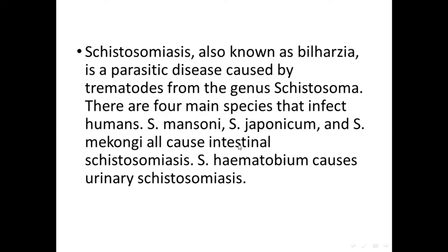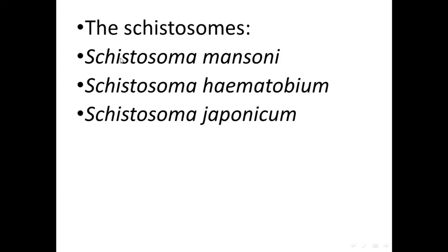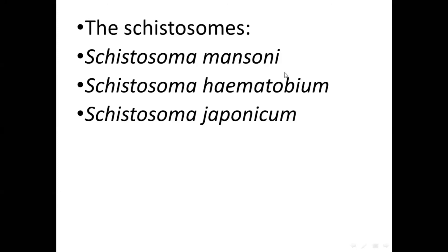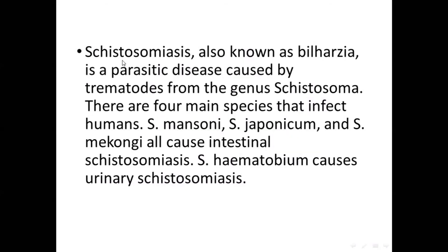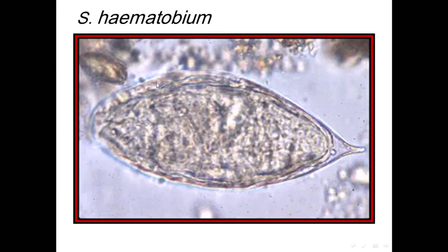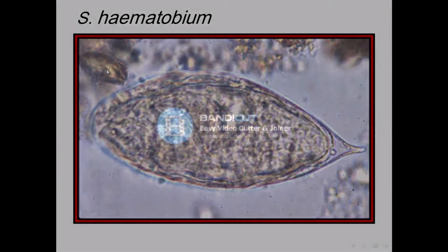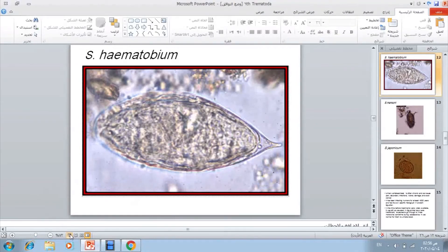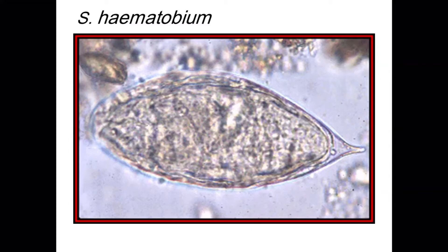بالنسبة لـ species of Schistosoma، حكينا عنهم — في عنا intestinal species: الـ mansoni والـ japonica. وفي عنا الـ haematobium بتعتبروها إنها بتسبب urinary schistosomiasis — بتسبب infection in the urinary system. About Schistosoma species eggs — this figure shows the egg of Schistosoma haematobium. شكلها مميز — الأشي المميز فيها إنها have a terminal spine.